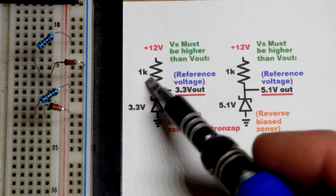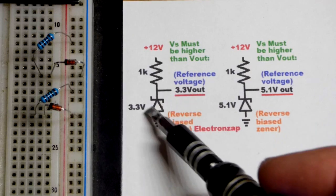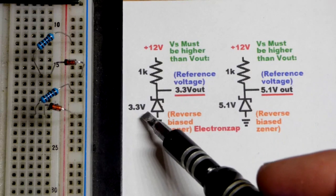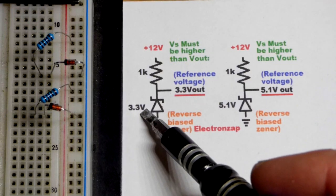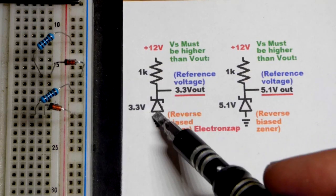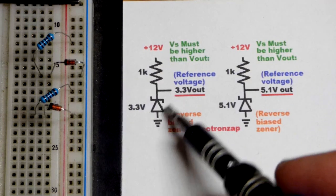So in any case you want to keep current limited. The amount of current does adjust this value a little bit, but for the most part you get close to this voltage built up across the Zener diode right there.